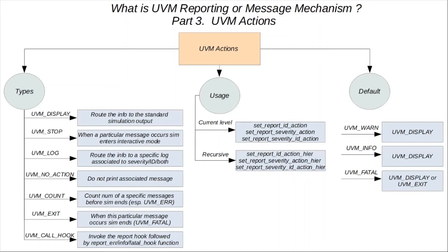UVM_FATAL not only gets displayed in the output log file, but the simulation is also aborted as soon as this message is encountered. UVM_ERROR, on the other hand, is associated with two actions: UVM_DISPLAY and UVM_COUNT. Display shows the error, and count tracks all error occurrences until the maximum error count is reached, at which point the simulation is aborted.